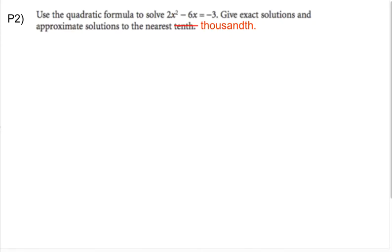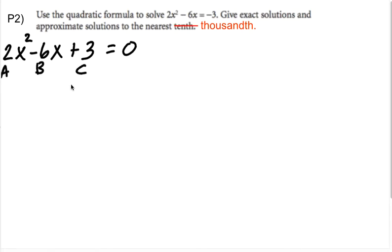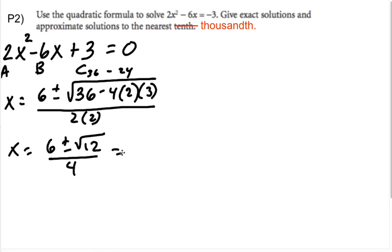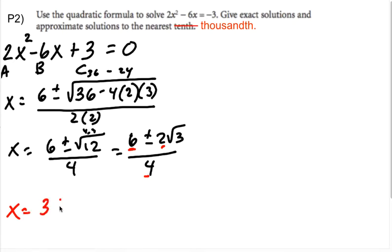Try P2. First, add 3 to the other side so everything equals zero. This gives a = 2, b = -6, c = 3. So x = (positive 6 ± √(36 - 4·2·3)) / (2·2) = (6 ± √(36 - 24)) / 4 = (6 ± √12) / 4. Since 12 = 4 × 3, √12 = 2√3. So x = (6 ± 2√3) / 4. Since all three terms share a factor of 2, simplify to (3 ± √3) / 2. That's the best form of the exact answer.